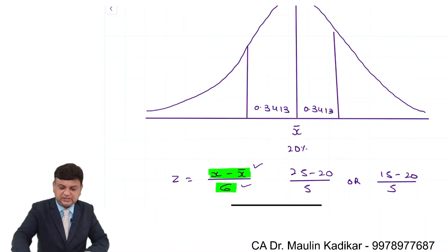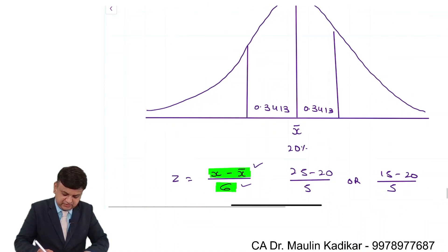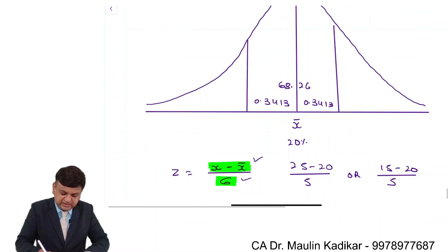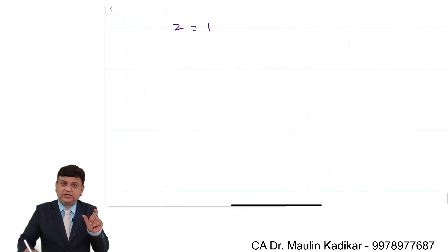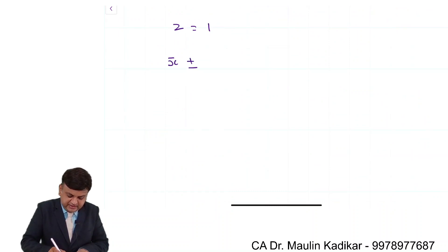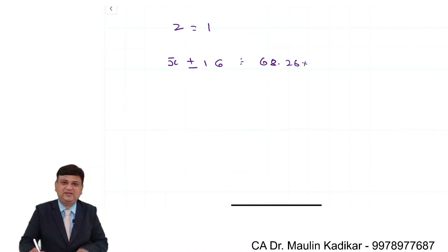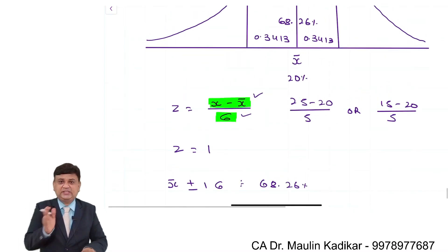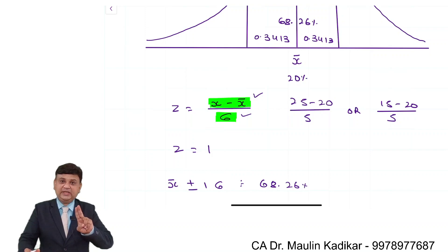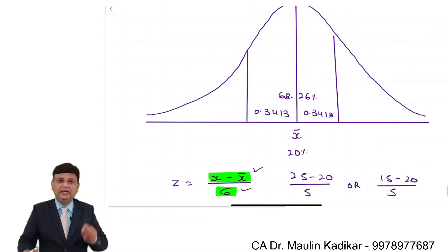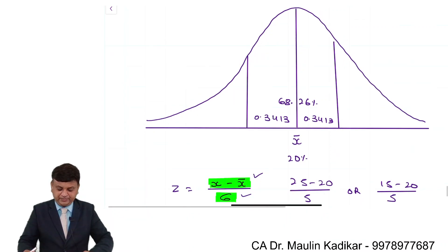The total of both sides is 68.26%. What this means is that the actual return will fall within X̄ ± 1 standard deviation with a probability of 68.26%. Standard deviation is indicating the volatility of the actual return in comparison to the mean return — what will be the deviation of the actual return from the mean return.